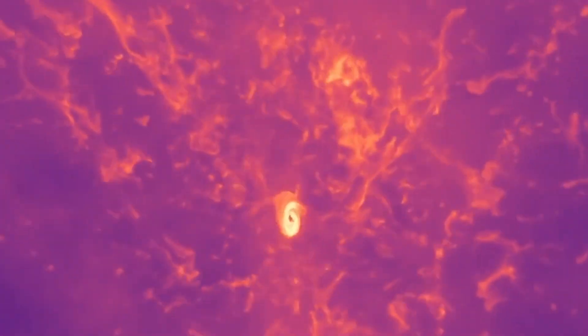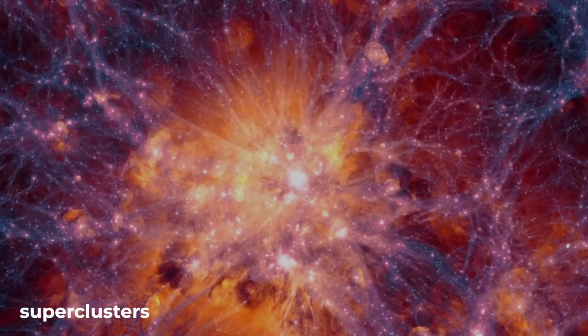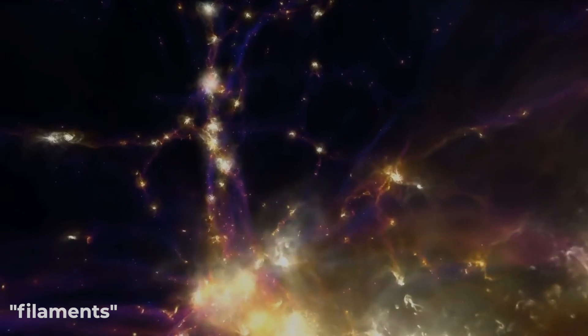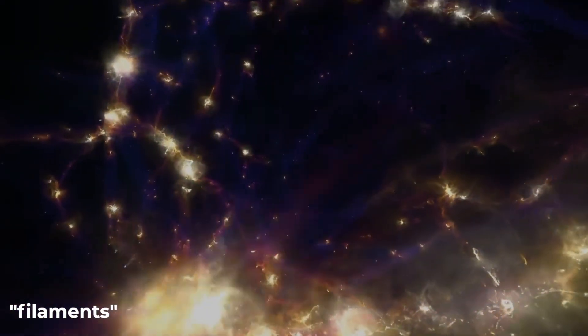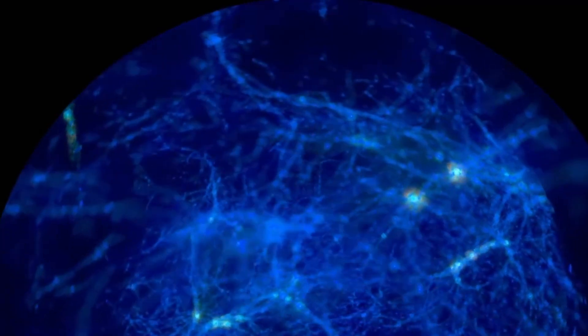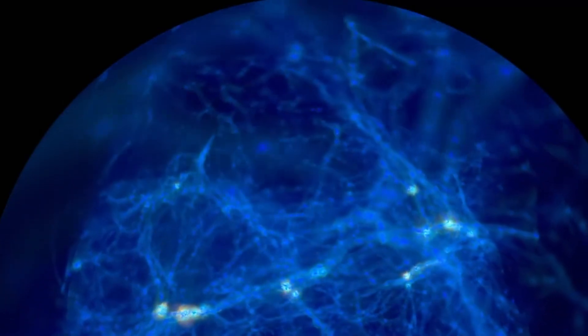The hierarchical structure of the universe implies that galaxies group into clusters, which in turn merge into superclusters. These superclusters can be part of even larger structures known as filaments, which are the primary elements of the cosmic web. This hierarchical arrangement helps us better understand how gravitational forces shape and organize matter in the universe.